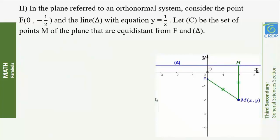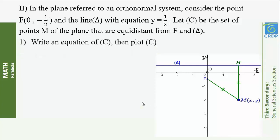In the plane referred to an orthonormal system, consider the point F(0, −½) and the line delta with equation y = ½. Let C be the set of points M of the plane that are equidistant from F and delta. Write an equation of C, then plot C.